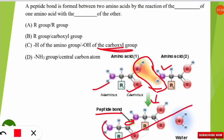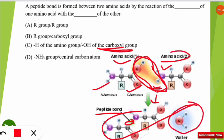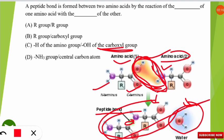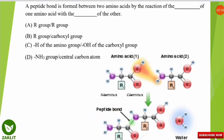When two amino acids are joined, the OH of one amino acid and the H from the other amino acid combine, releasing H₂O — that is, water. After this release, the two amino acids are joined with the help of a peptide bond. This is the basic concept of amino acids and peptide bond formation.